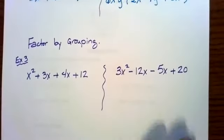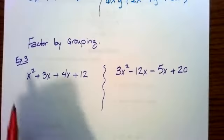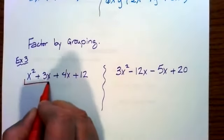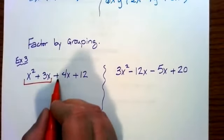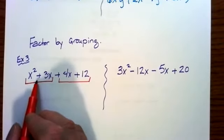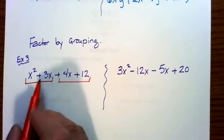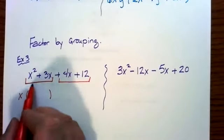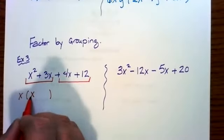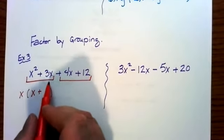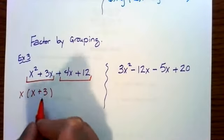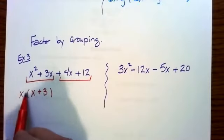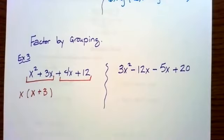Factoring by grouping is a nice technique when you have four terms. Group them two by two — take the first two terms as one part, then the second two as another. For the first group, the GCF is x. Pulling out x leaves x(x + 3), since x² ÷ x = x and 3x ÷ x = 3. You can always check by distributing back: x times x gives x², and x times 3 gives 3x.